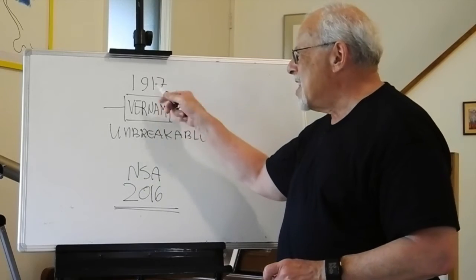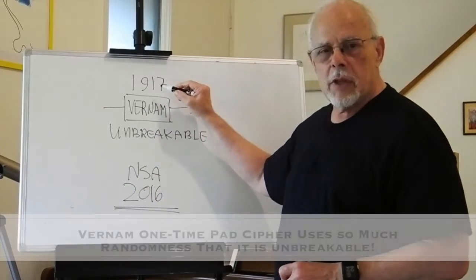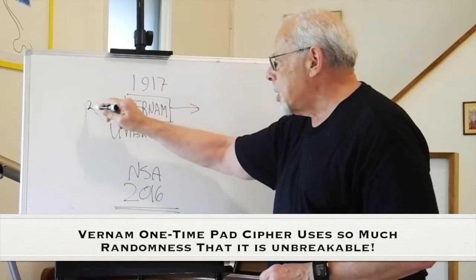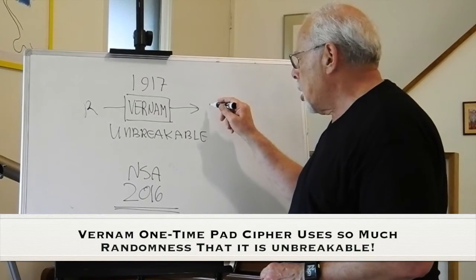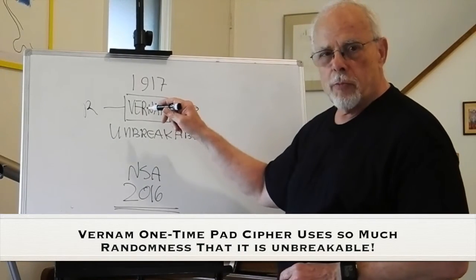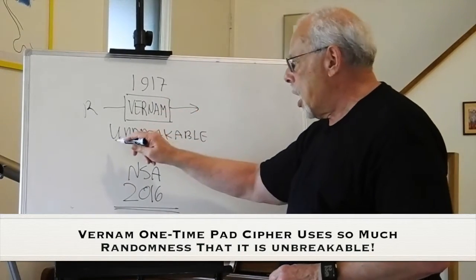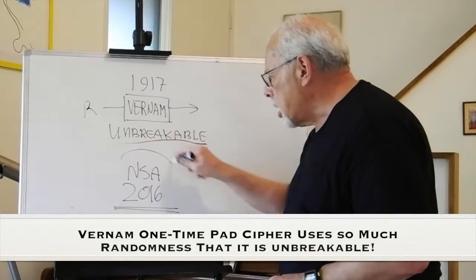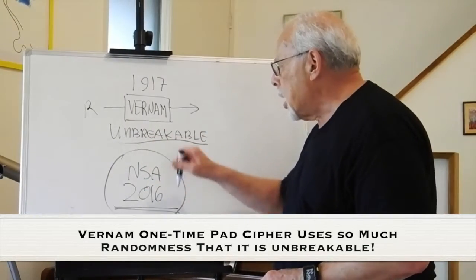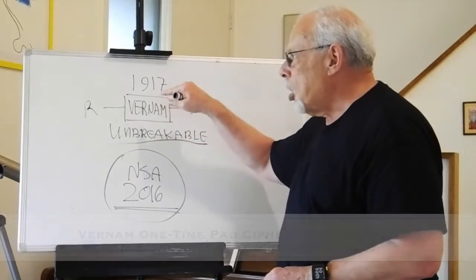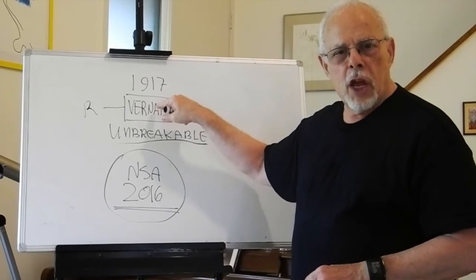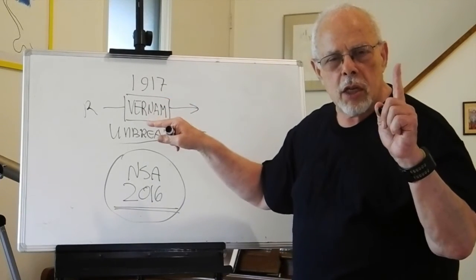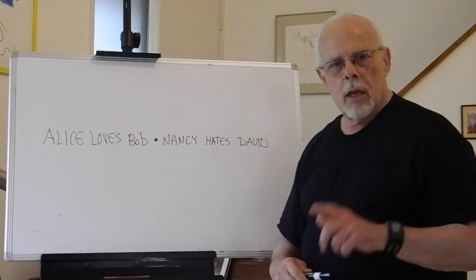That is why a cipher invented by Gilbert S. Vernam in 1917, based on randomness input to encrypt a message, is unbreakable. Even the NSA in 2016 cannot crack a cipher invented in 1917, because of randomness.